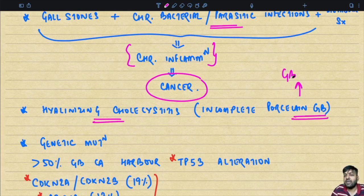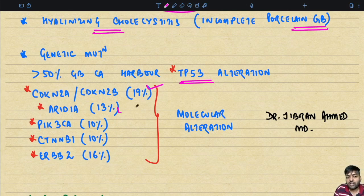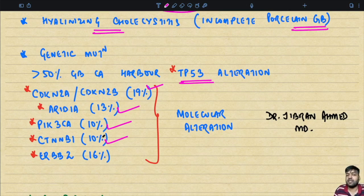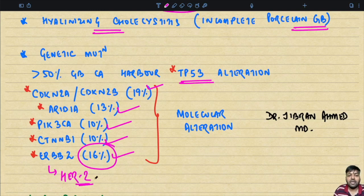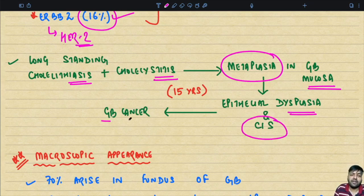More than 50% of gallbladder carcinomas harbor TP53 alteration. Other molecular alterations include CDKN2A/CDKN2B in 19% of cases, ARID1A mutation in 13%, PIK3CA mutation in 10%, CTNNB1 in only 10% — compared to 60% in pyloric gland adenoma, confirming the different molecular profile. ERBB2 (HER2) mutation is present in 16% of cases. Long-standing cholelithiasis and cholecystitis lead to metaplasia in the gallbladder mucosa, followed by epithelial dysplasia and carcinoma in situ, giving rise to gallbladder carcinoma — a process taking approximately 15 years.